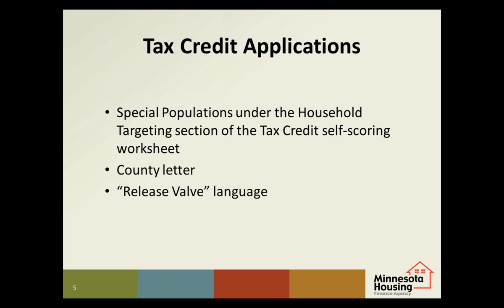To help determine if the development is eligible for Section 811 PRA, we have added a question on the Intent to Apply form asking if you are applying for tax credits and Section 811. If you indicate yes, we will send you a short questionnaire to help determine if the property will be eligible. We will notify you before the application due date. This will help you determine if you still want to take the Special Population Points without the Section 811 rental assistance. If the points are taken, the Special Population restriction will be recorded in the tax credit legal documents. We will provide release valve language similar to what we do for LTH unit restrictions — owners will be released from the requirement if the necessary funding to serve these populations is no longer available due to reasons beyond their control.